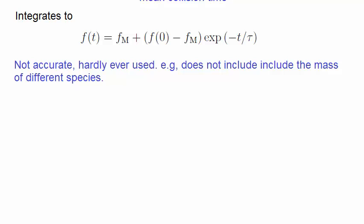But, for example, it doesn't include the mass of the different colliding species. So, even though we know that the distribution function will become a Maxwellian at infinite time, this is usually not of interest to us.